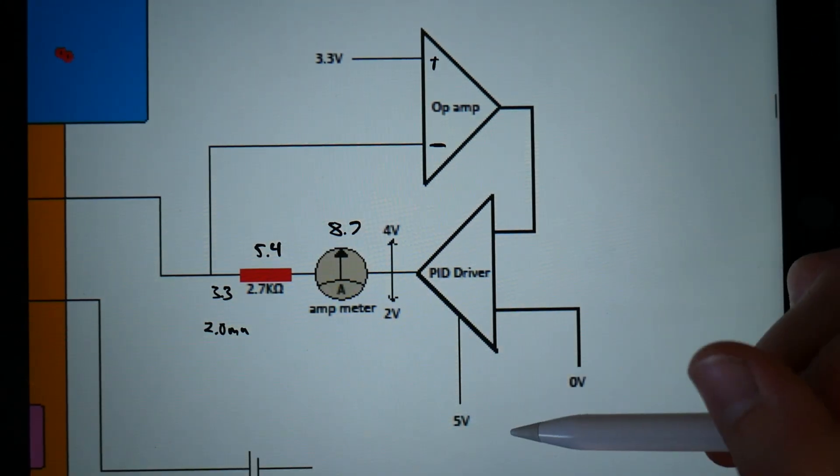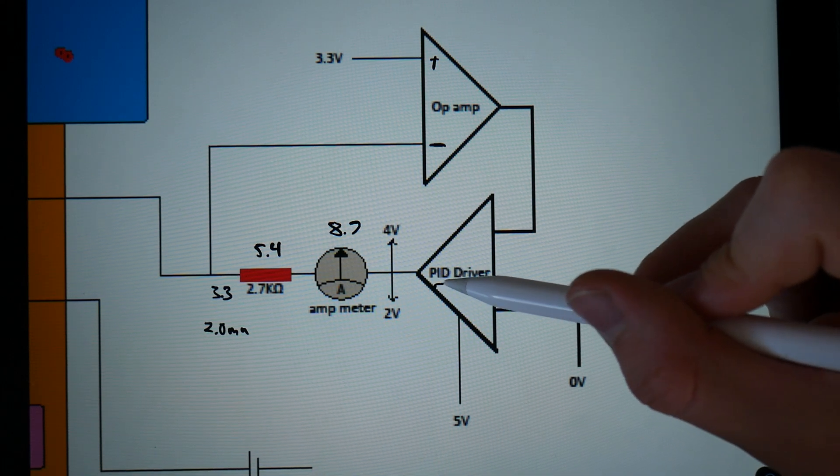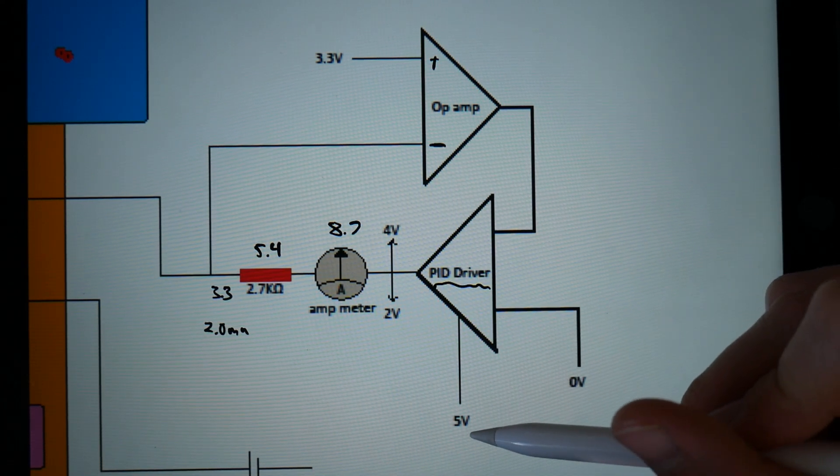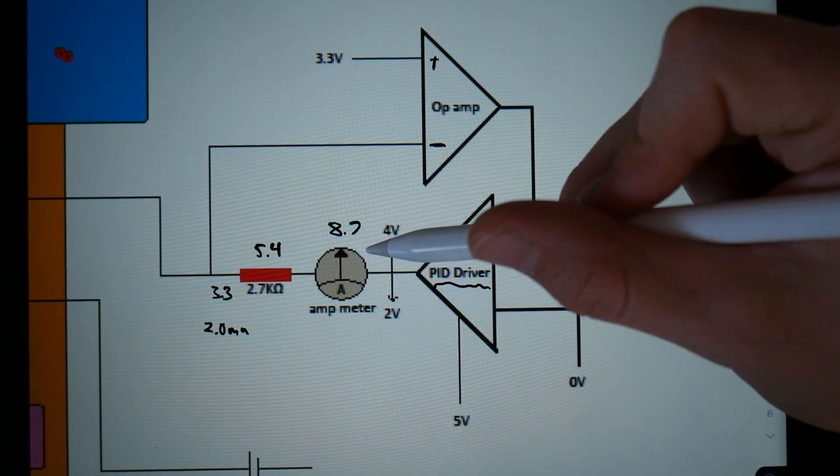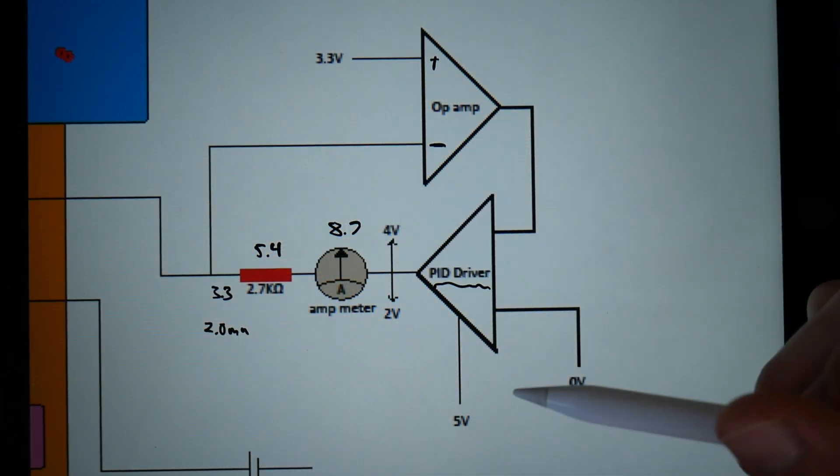And why do they have an ammeter heater? You're supposed to be measuring the voltage output at this point. That's the whole point of this circuit. And then also, they're supplying this so-called PID driver, which is really just an op-amp, with 5 volts. So there's no way it could produce 8.7 volts. So this circuit is just dumb.